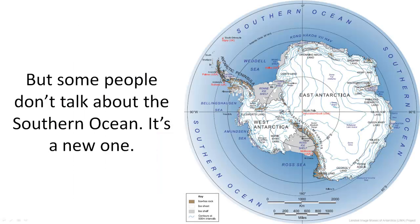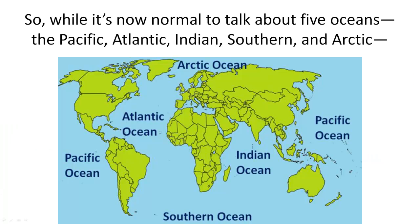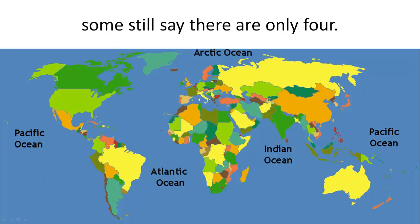But some people don't talk about the Southern Ocean. It's a new one. They just talk about the South Pacific, South Atlantic, and Indian Oceans. So while it's now normal to talk about five oceans — the Pacific, Atlantic, Indian, Southern, and Arctic — some still say there are only four.